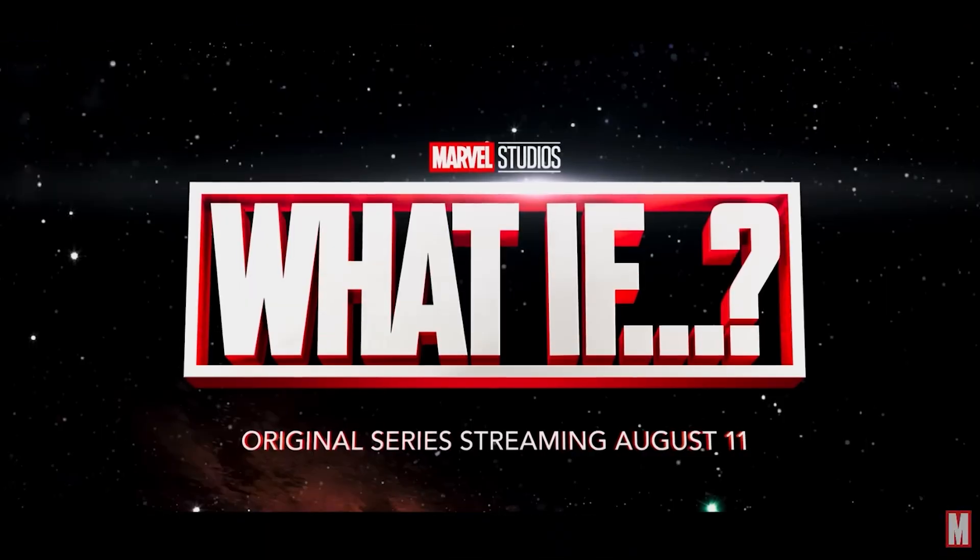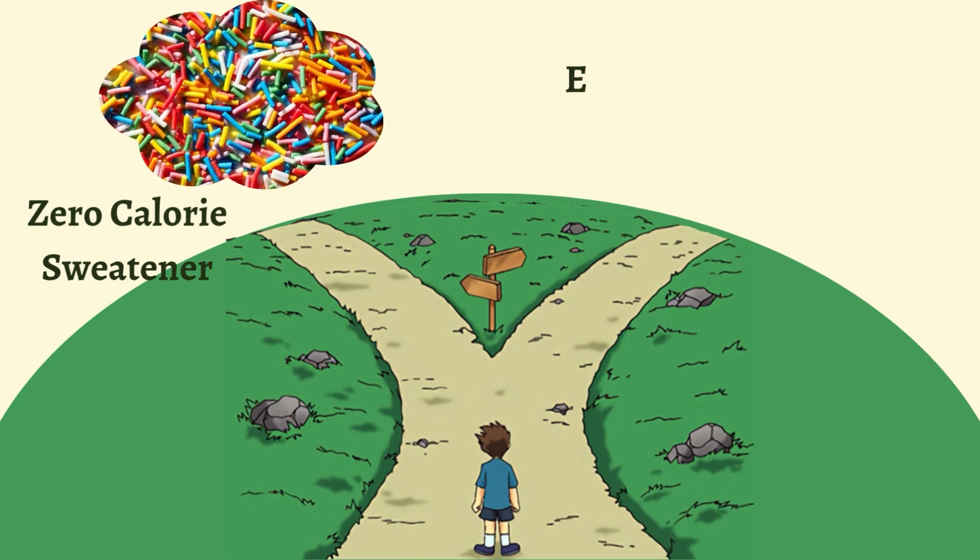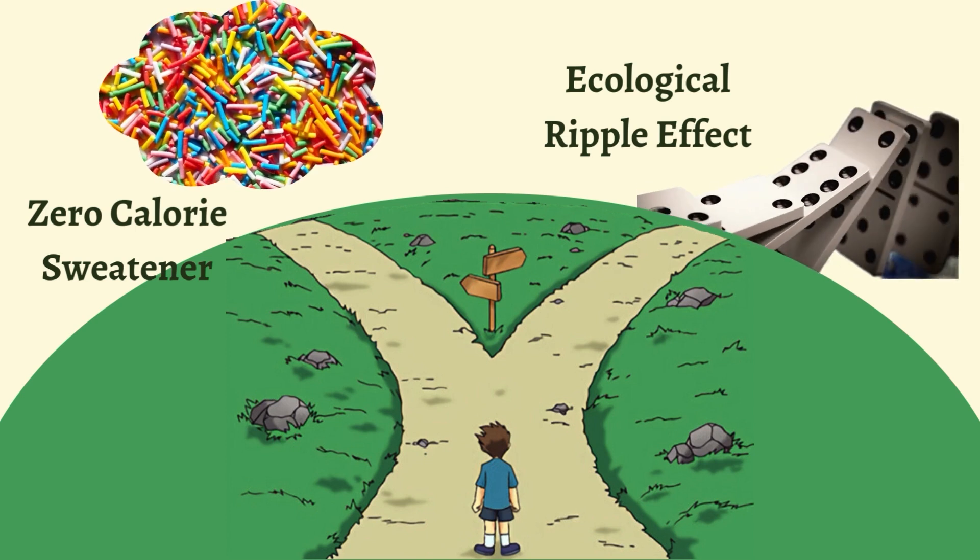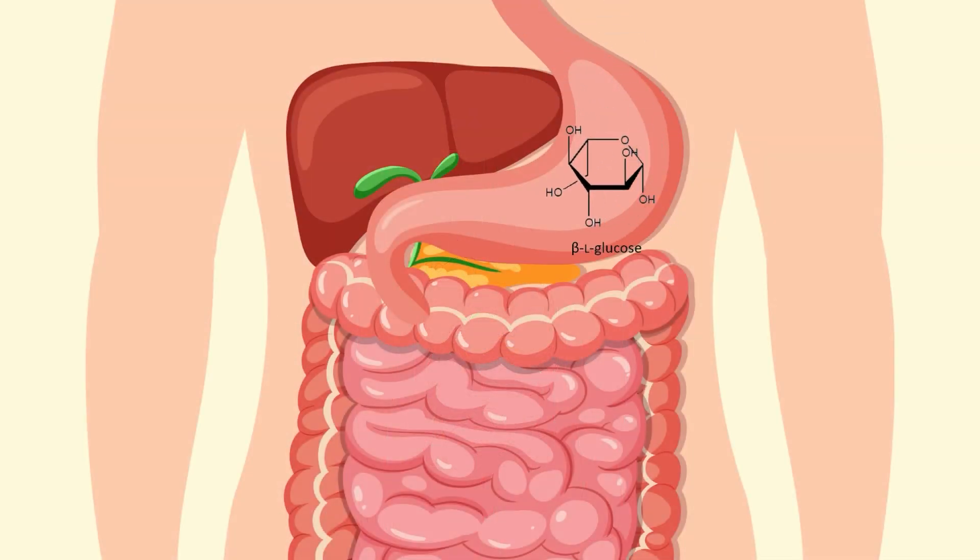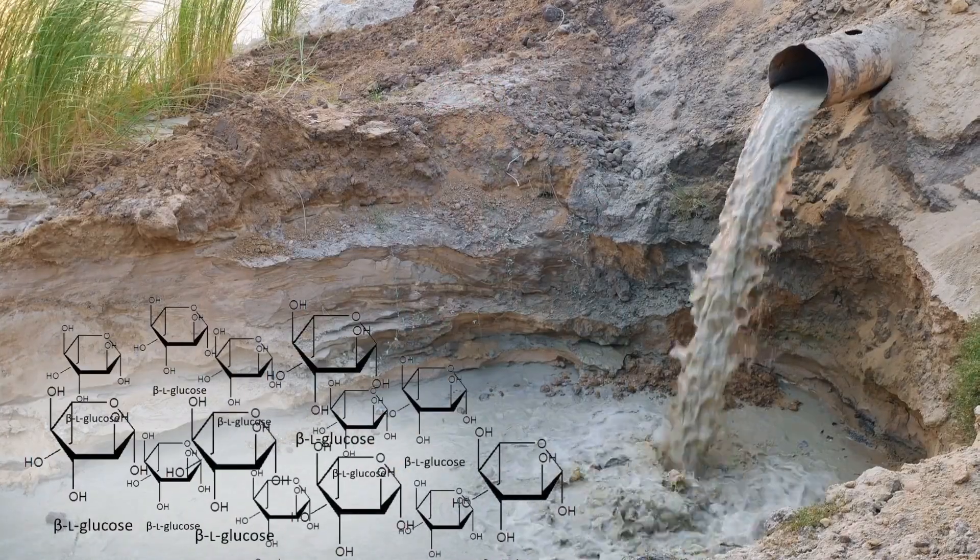Let's discuss a what-if scenario now, shall we? While the prospect of using L-Sugars as a zero-calorie sweetener is undeniably appealing, it's important to consider the potential ecological ripple effects. Since our bodies can't metabolize L-Sugars, they would pass through our digestive system unchanged and enter wastewater systems.